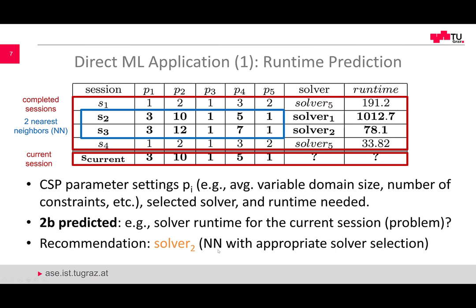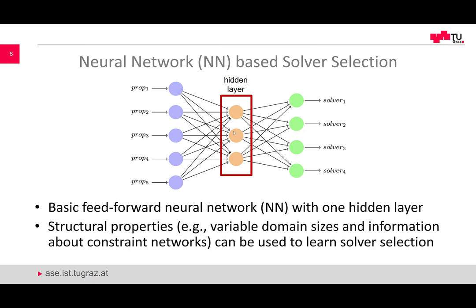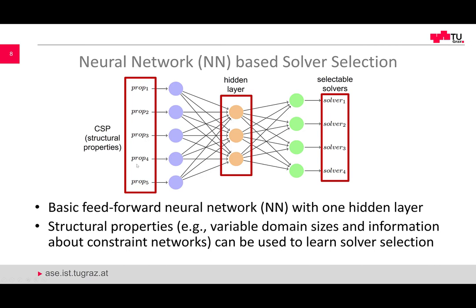This is a very simple example described on the basis of a nearest neighbor approach, but different other machine learning approaches can be used to build a corresponding model and help select the most appropriate solver in the current context. The problem can also be tackled on the basis of a neural network architecture — a basic feedforward neural network — where the network helps figure out which solver is appropriate in the current setting, based on a set of basic properties describing a constraint satisfaction problem.